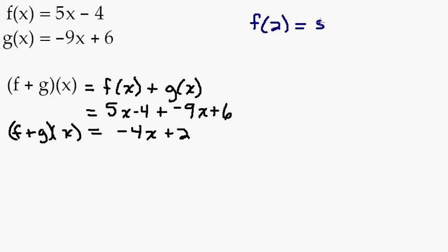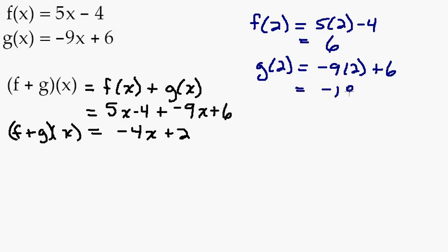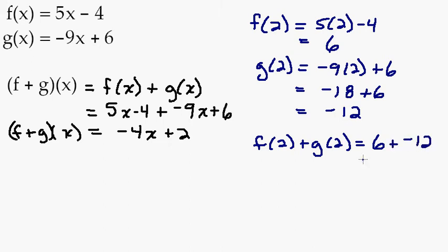So let's say f of 2 would be 5 times 2, take away 4, which would be 10, take away 4, which would be 6. And g of 2 would be negative 9 times 2 plus 6. So that would give me negative 18 plus 6, which is negative 12. So if I looked at what would f of 2 plus g of 2, what if I wanted to add these together? Well, f of 2 came out to be 6, and g of 2 was negative 12, so f of 2 plus g of 2 was negative 6.